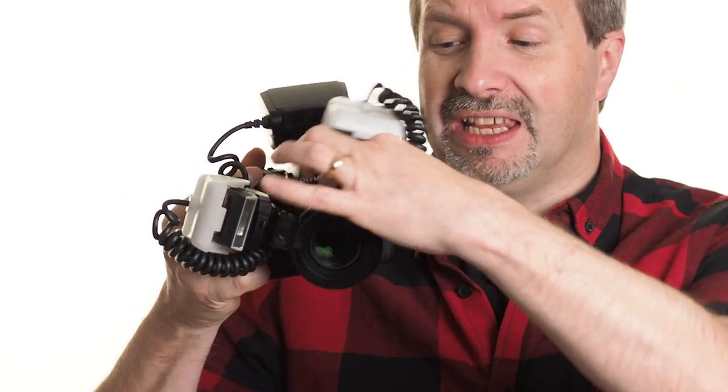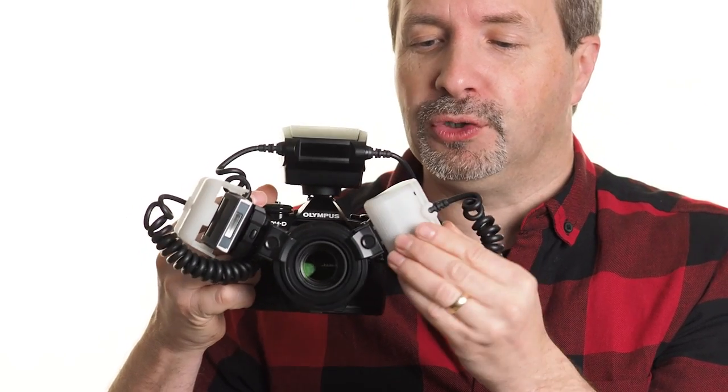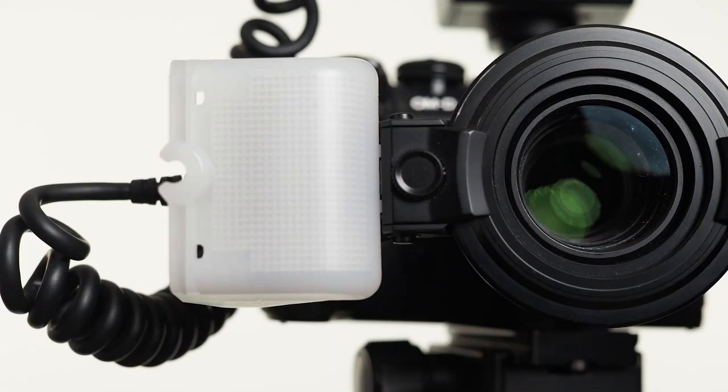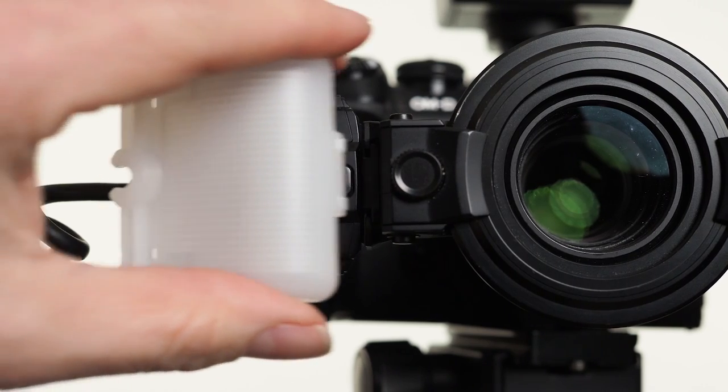Each of the twin flashes can be individually rotated and angled. There's also diffusing caps for each flash. These can help to soften the shadows in your pictures and reduce the hot spots on shiny subjects.